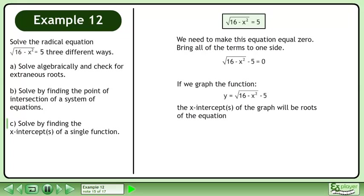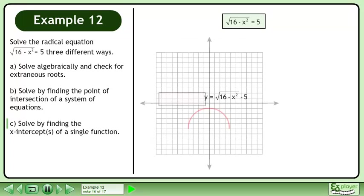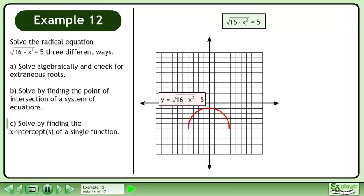If we graph the function y = √(16-x²) - 5, the x-intercepts will be roots of the equation. Draw the graph. There are no x-intercepts, so there are no real solutions.